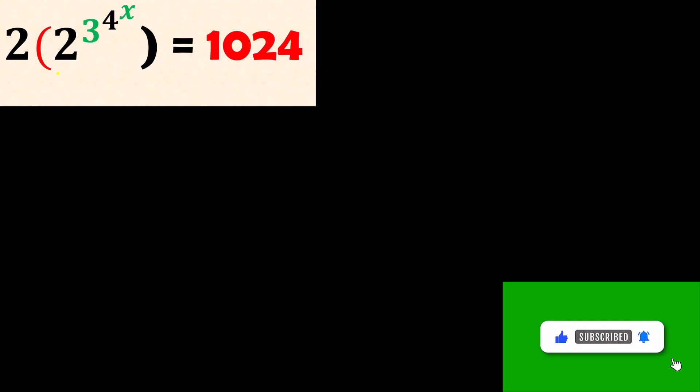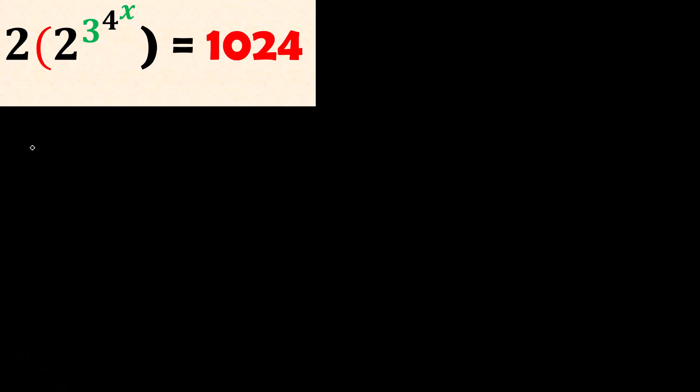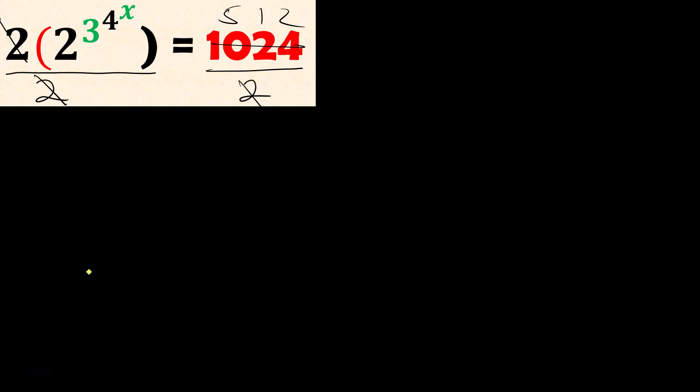We have 2 outside the brackets, so we can divide both sides by 2. Dividing each side by 2, this cancels out, and 1024 divided by 2 is 512. So we have 2^(3^(4x)) = 512.